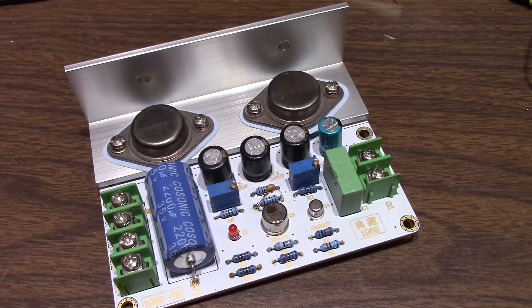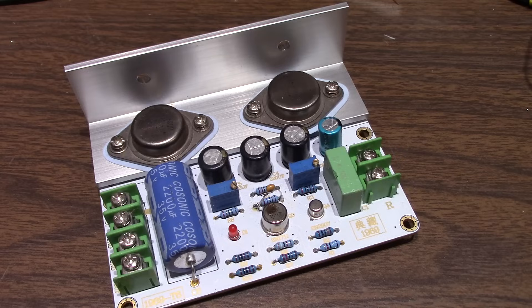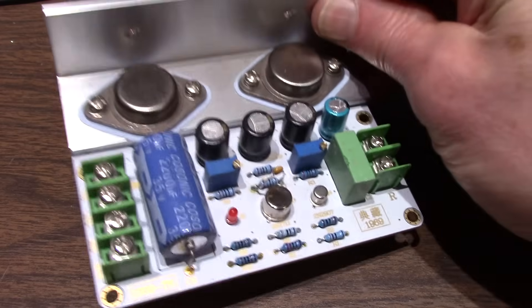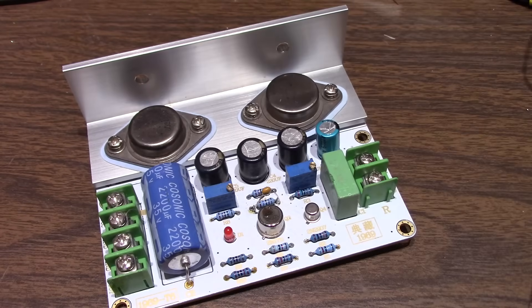So they need quite a bit of heat sink because of that constant power draw and they're trying to address an issue I don't think really is a problem and that's crossover distortion. A properly biased class A B amp has very low distortion at low power so there's just no way crossover distortion in a properly biased A B amp is audible.